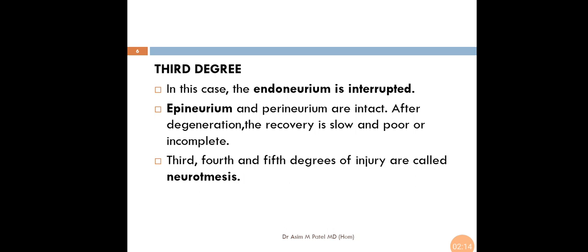Third Degree of Injury: In this case, the endoneurium is interrupted. Epineurium and Perineurium are intact. After degeneration, the recovery is slow and poor or incomplete. Third, Fourth and Fifth Degrees of Injury are called neurotmesis.